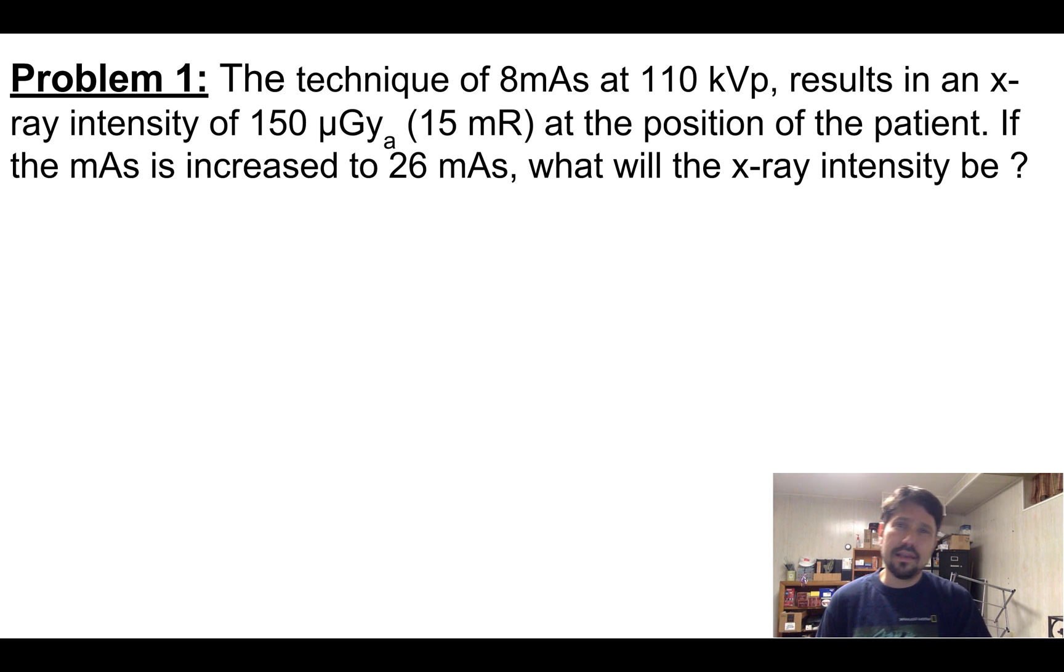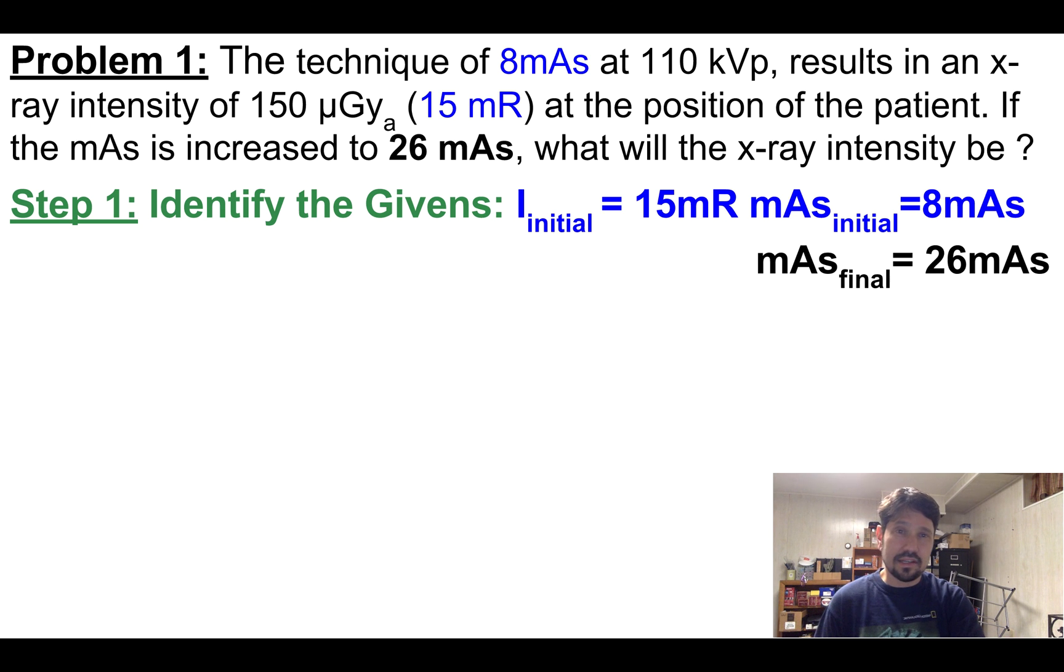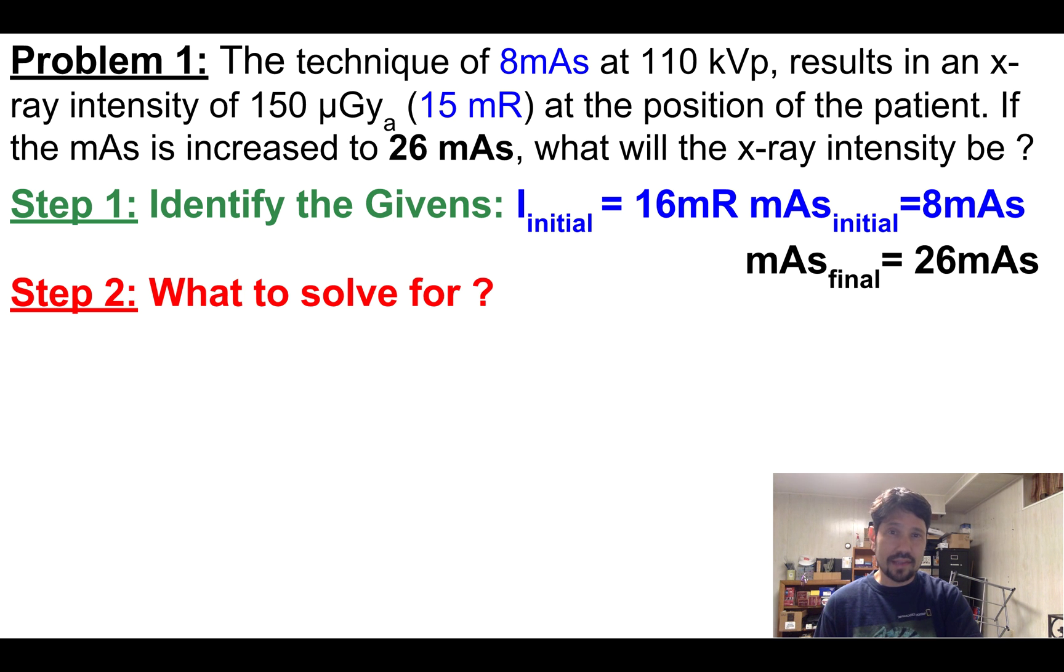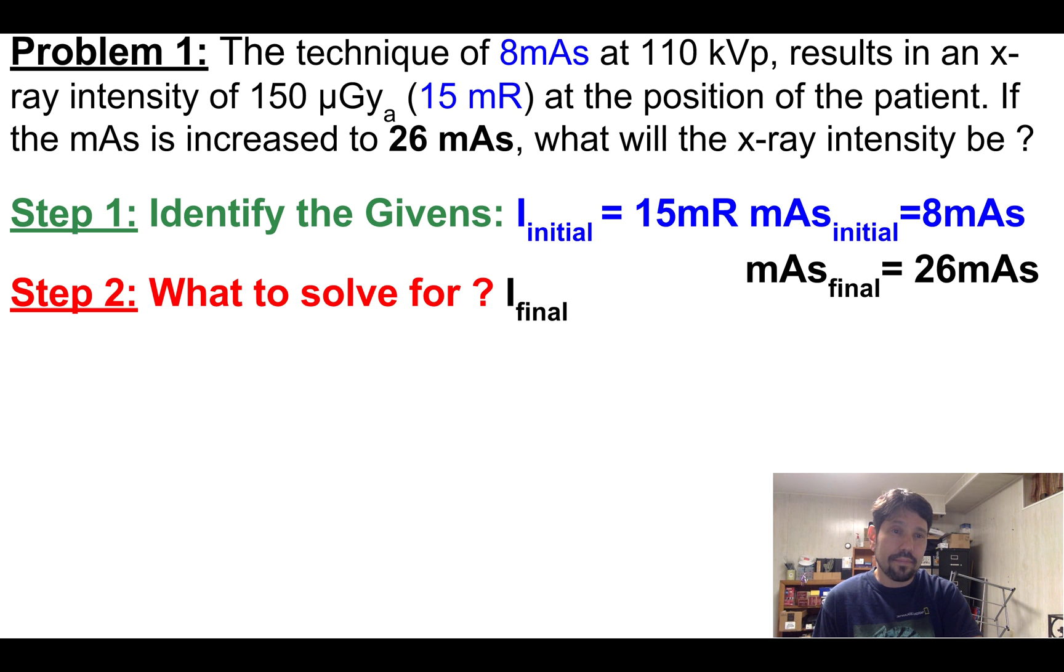All right, here's problem one. The technique of 8mAs at 110 kVp results in an intensity of 15 mR. If the mAs is increased to 26, what will the intensity be? So here I've got, what are my givens? The initial intensity is 15, the initial mAs is 8, my final mAs is 26. What am I going to solve for? I'm solving for what my new intensity will be, intensity final.